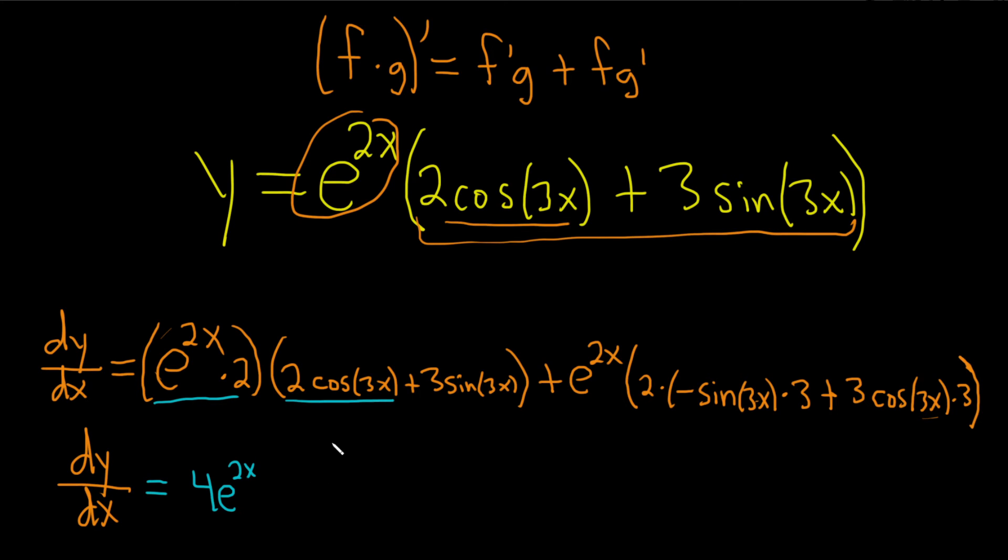I guess I could have pulled out an e to the 2x too. Oh well. Too late. Cosine. We can still do it this way. 3x.